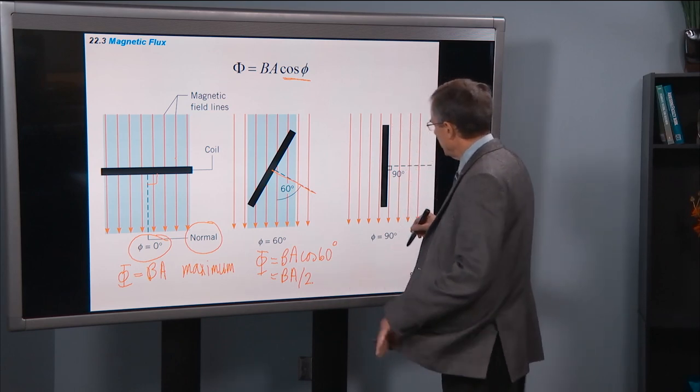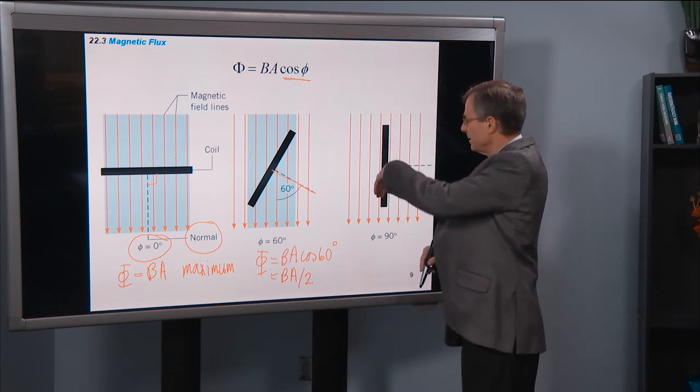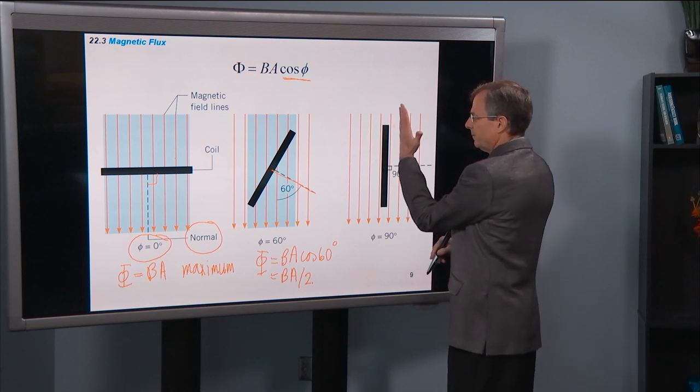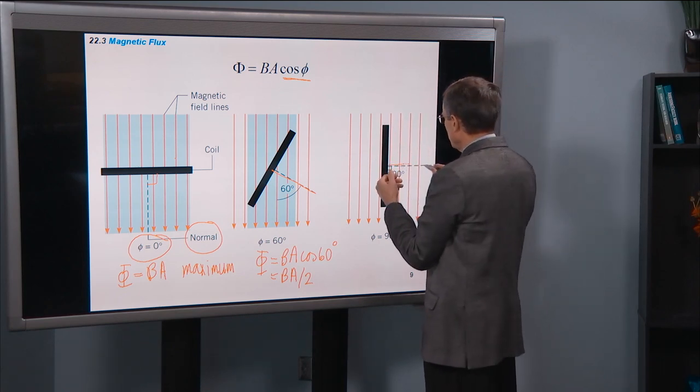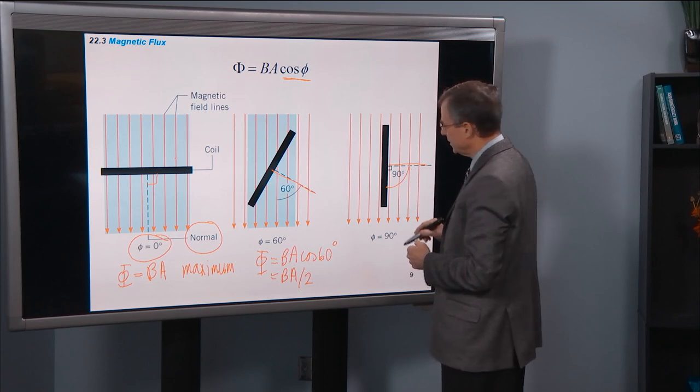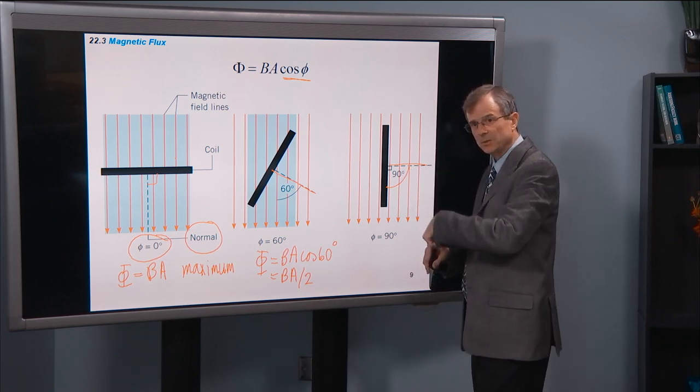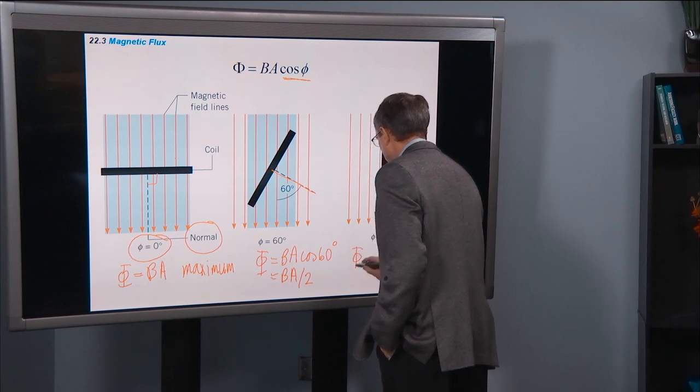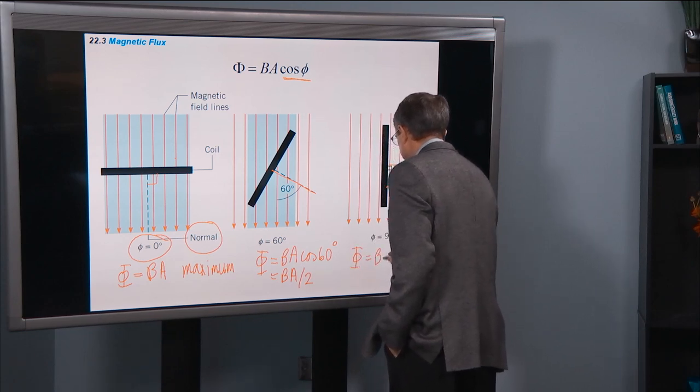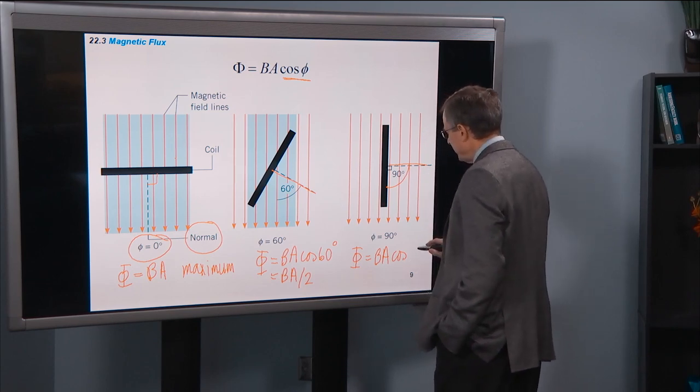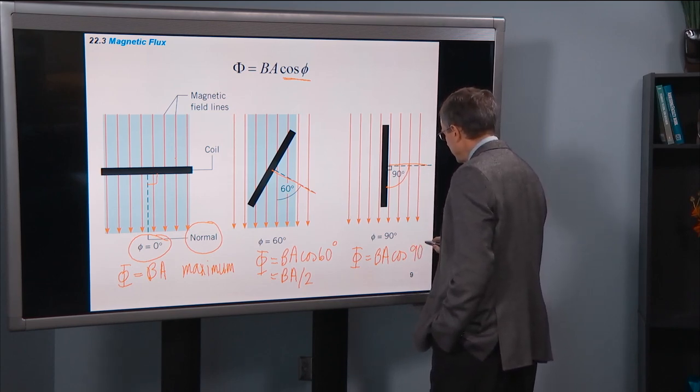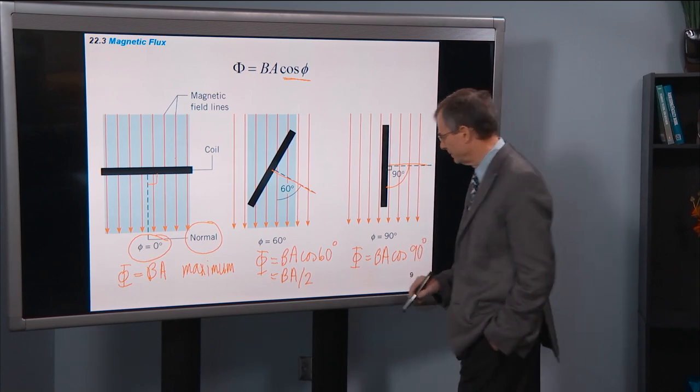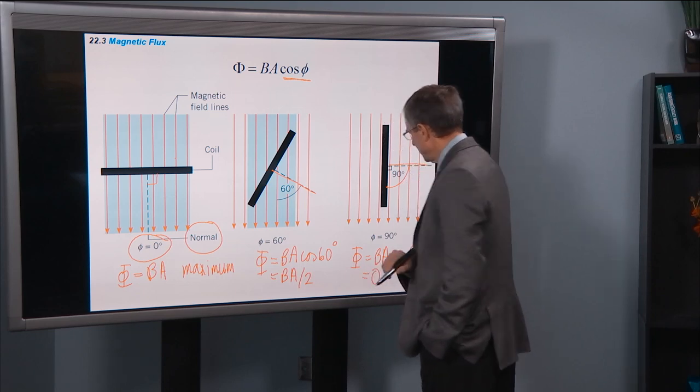Then this is the case where we have magnetic fields still in the same direction, but now the surface is like this. The normal is out to the right, the angle between the surface and the magnetic field is 90 degrees. What do we get in this case for the magnetic flux? B, A, cosine 90 degrees. And what's the cosine of 90? It's zero.